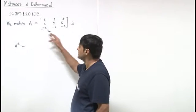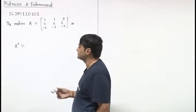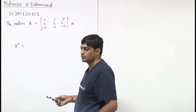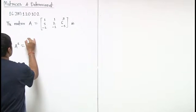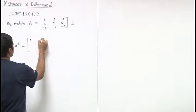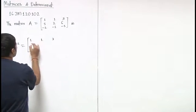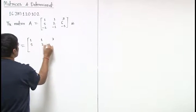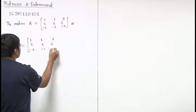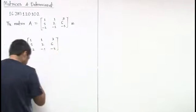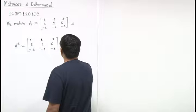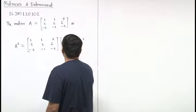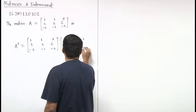In this question we have given matrix A and we have to check whether it is nilpotent or idempotent. We will find A squared: the matrix is [1, 1, 3; 5, 2, 6; -2, -1, -3] multiplied by the same matrix [1, 1, 3; 5, 2, 6; -2, -1, -3].